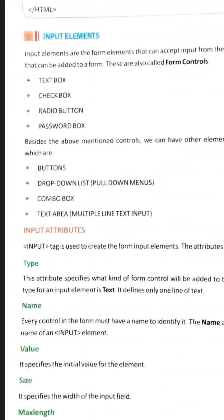When we use these input elements, you will understand them one by one. All input elements are made using the input tag, and in the input tag you will use some attributes. The first attribute is the type attribute — by the name of the type attribute, you define which input element you want. If you want a text box, check box, or radio button, you specify that using the type attribute.